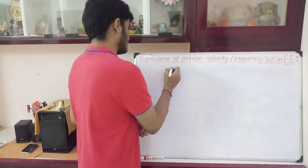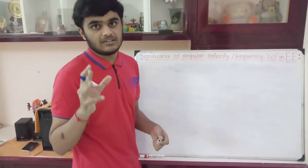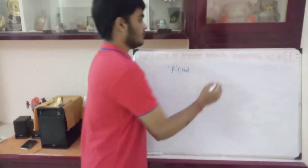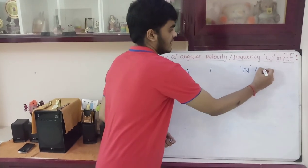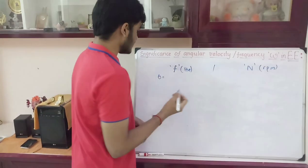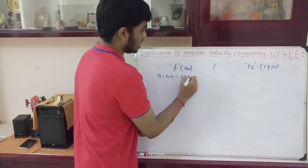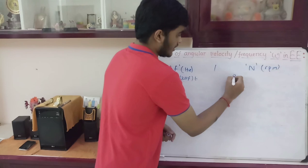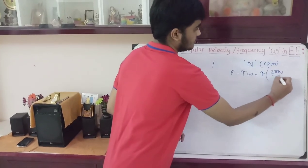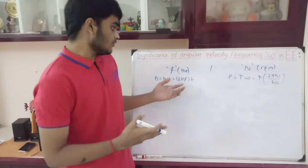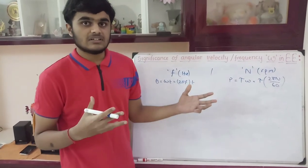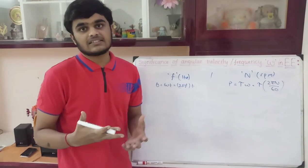Every sinusoidal electrical wave will have a particular frequency f in hertz, and every rotating body will have a particular speed standardly given in revolutions per minute. But in our calculations, in phase angle calculations we use theta = omega × t = 2πf × t, and in power calculations we use power = torque × omega = torque × 2πn/60. What are we actually doing? Why are we multiplying 2π, and why are we multiplying 2π by 60? There is something like a conversion, like scaling. What is the exact meaning of this?